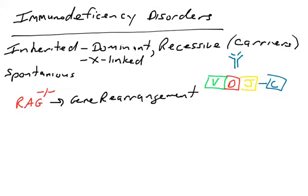If you don't make the RAG enzyme, you cannot rearrange your heavy chain gene or your light chain gene, which means you will not make VDJ regions, which means you will not make heavy chain protein or light chain protein.